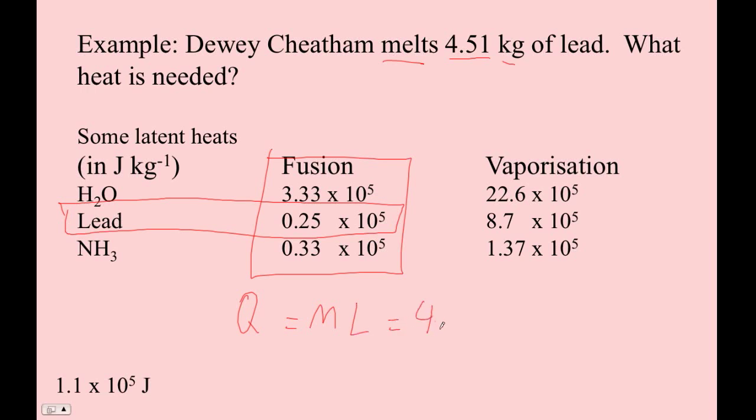So that's 4.51 kilograms. And then every kilogram, that's what this means. Every kilogram to melt it takes 0.25 times 10 to the fifth.